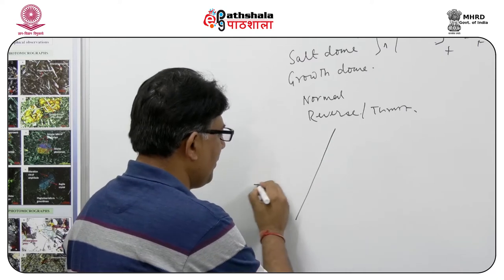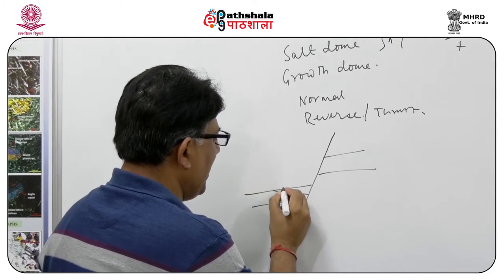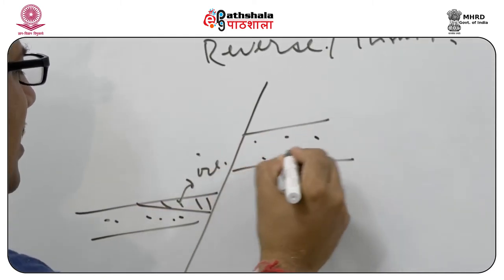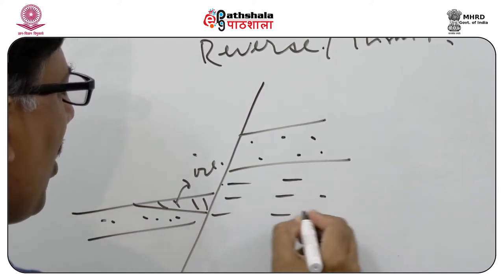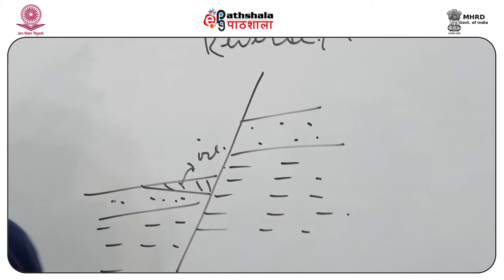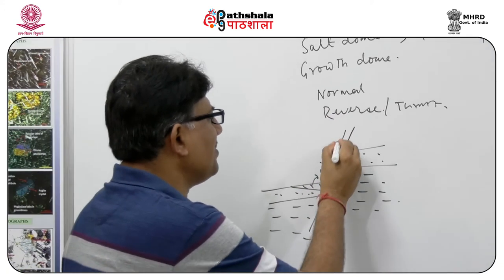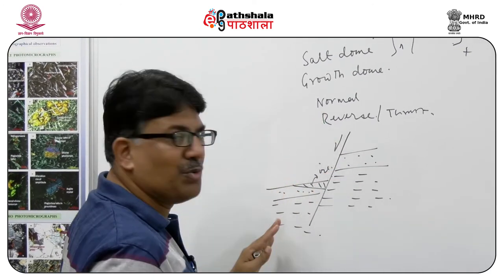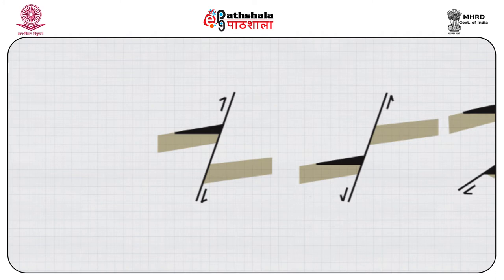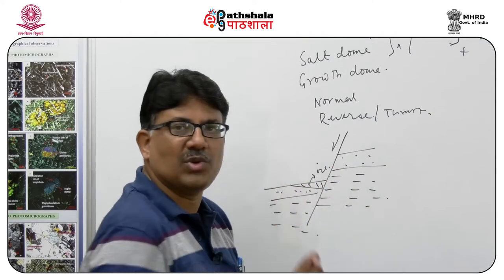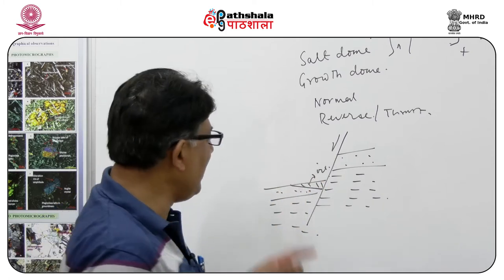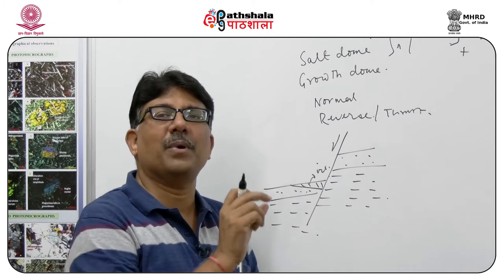If there is a normal fault and the reservoir strata is down-thrown, it has come in contact with impermeable strata on the side. It is now acting as a seal — the hydrocarbon cannot escape through that way because of the impermeable rock. So there is an accumulation of hydrocarbon here; the fault is acting as a seal and thereby accumulating hydrocarbon against the seal.